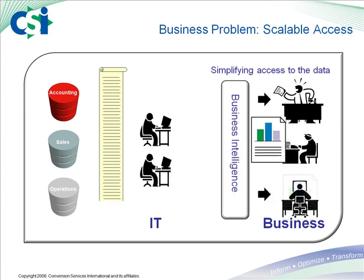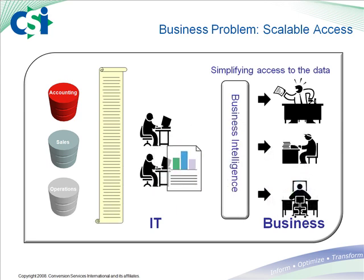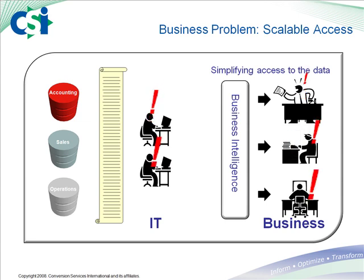Then frustration sets in because IT begins to think that the business users don't know what they want, and business users think that IT doesn't know what it's doing. If this sounds familiar, then realize you're not alone. Now, let me make it clear that IT doesn't want to be in the position of hand-building each report. So that covers our third problem: inefficient information access.